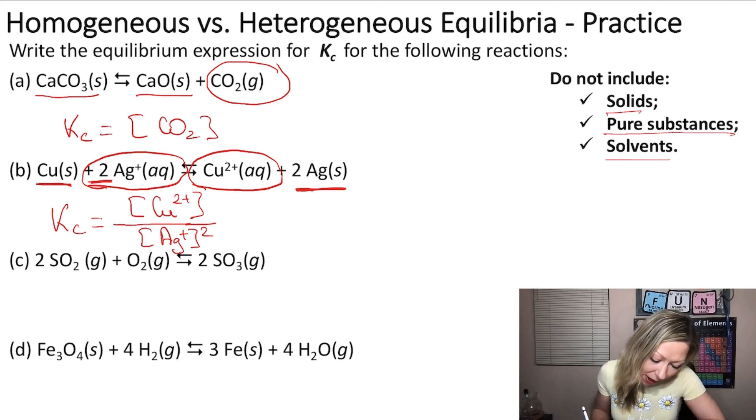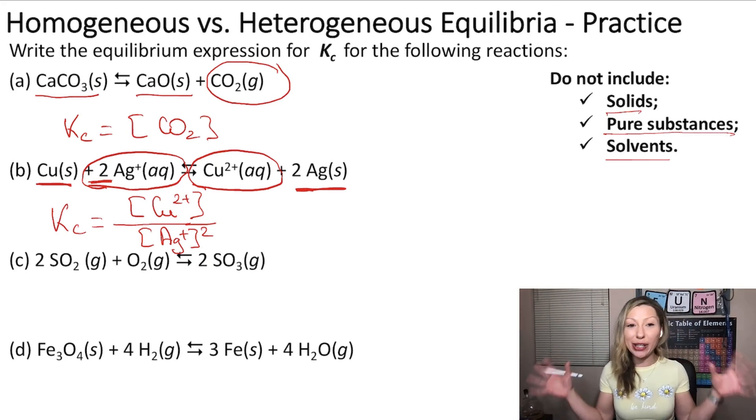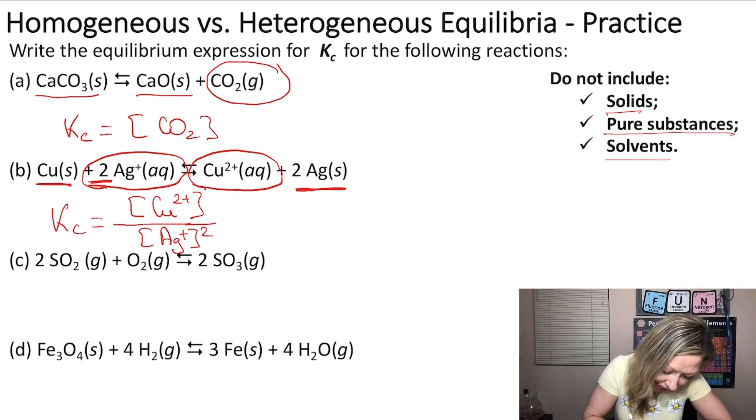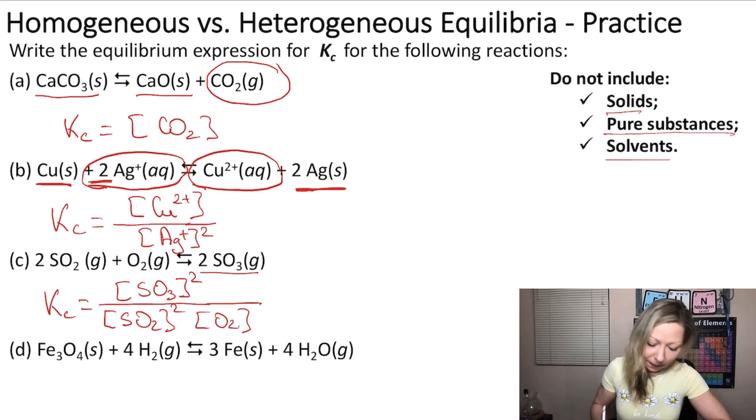Okay, what about the third reaction? Well, I think that we only have gases, so we need to include everything in that case. So Kc equals to the concentration of SO3 squared, divided by the concentration of SO2 squared, multiplied by the concentration of O2.